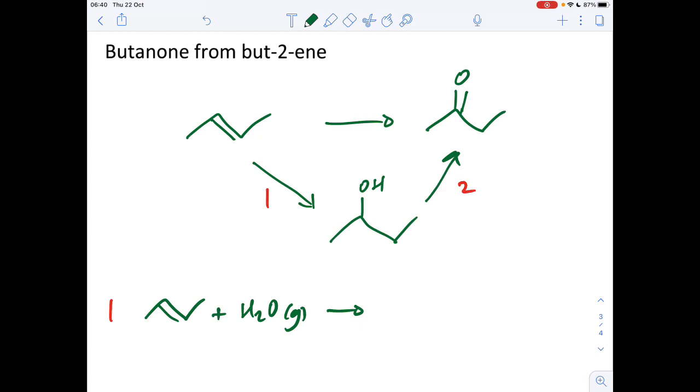Some conditions, obviously to generate steam, the temperature needs to be above 100 degrees C. And we also need a strong acid catalyst. So you could either go for H3PO4 or sulphuric acid. So I've gone for H3PO4 there.